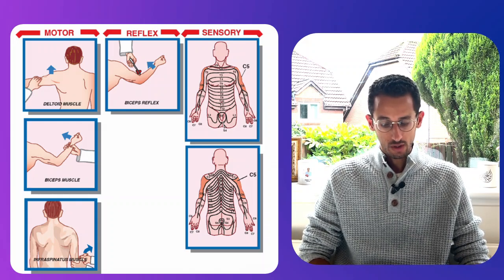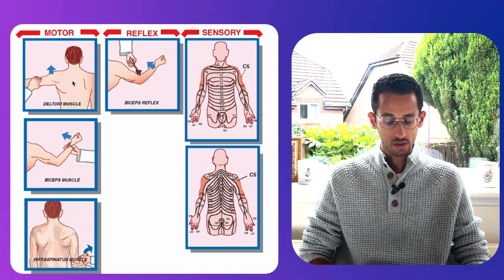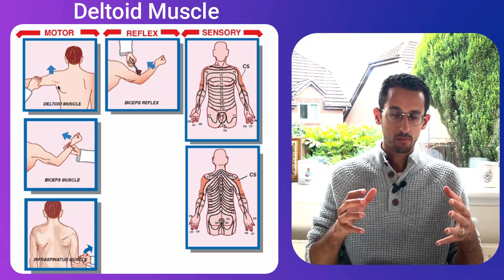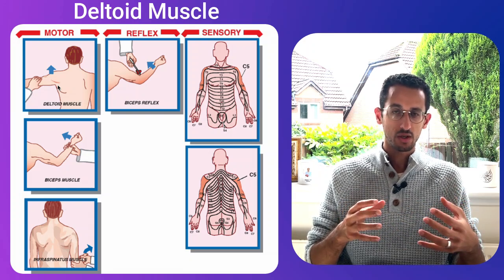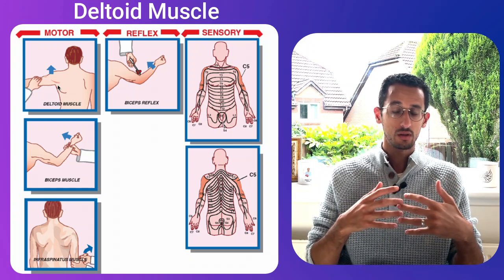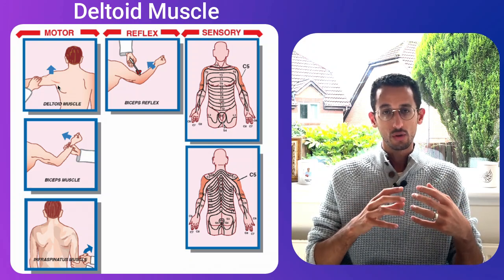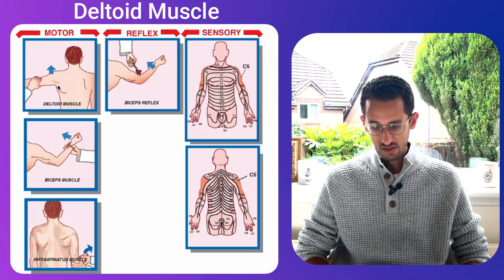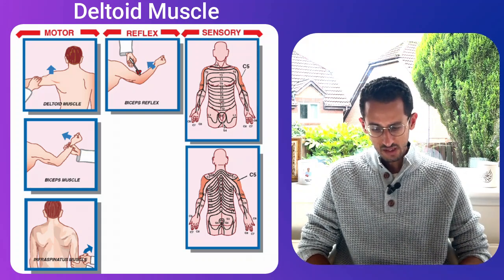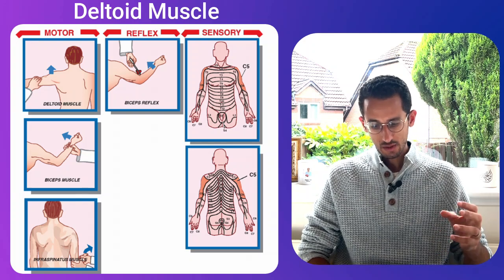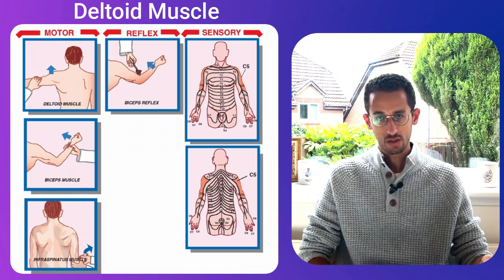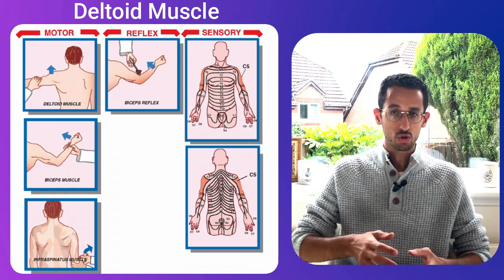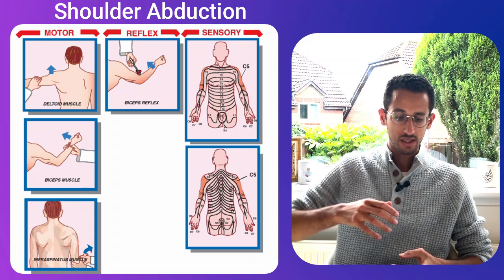For the C5 nerve root, we'll start with the motor supply. Looking at this picture, the first and most important muscle to test for the C5 nerve root is the deltoid muscle. When testing these muscles, you have to appreciate that there is an overlap of nerve supply, so a muscle might be dual-supplied by other nerves. The deltoid muscle is supplied by C5, making it the best muscle to test for the C5 nerve root.